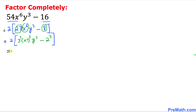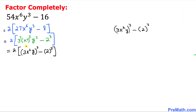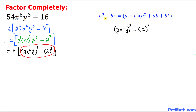Let's go further. We can write 2 times, and the whole first term inside the bracket can be written as (3x²y)³ minus 2³. This represents the difference of two cubes. So we are going to use the difference of two cubes formula: a³ - b³ = (a - b)(a² + ab + b²). In our case, 3x²y is going to behave like a and 2 is going to be b.